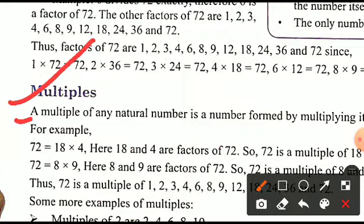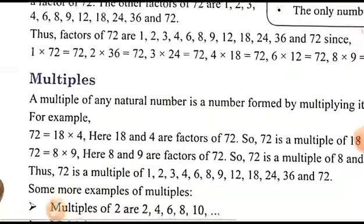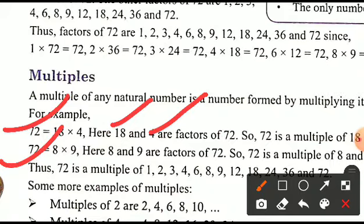Multiples: a multiple of any natural number is found by multiplying it by another natural number. For example, 72 = 18 × 4, so 72 is a multiple of both 18 and 4. Similarly, 72 = 8 × 9, so 72 is also a multiple of 8 and 9.